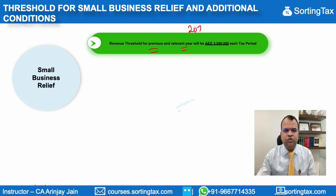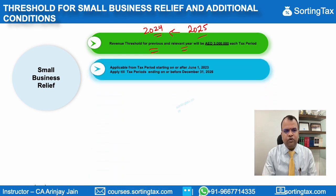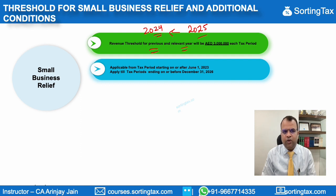If you are trying to claim this benefit in 2025, then in the year before — which is 2024 — your revenue should also be less than 3 million dirhams. This exemption is applicable from the tax period which commences on or after June 1, 2023, and there is no wonder why, because the UAE Corporate Tax law itself is applicable from June 1, 2023.